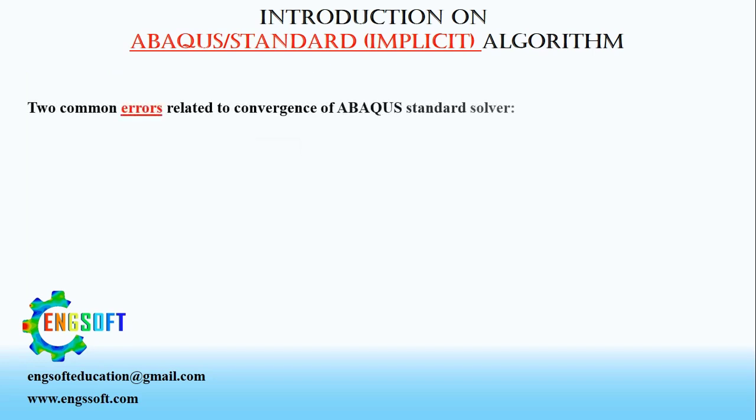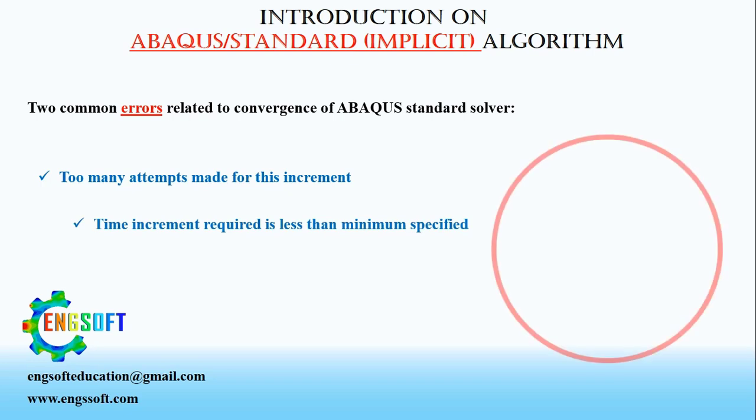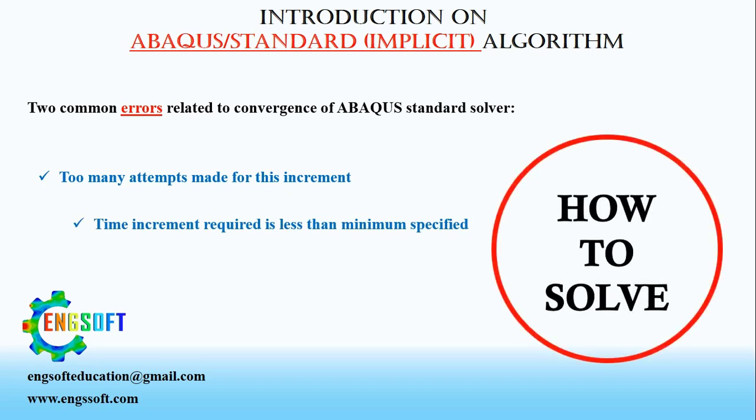There are two common errors related to convergence of implicit solver method, which are: too many attempts made for this increment, and time increment required is less than minimum specified. How to solve and avoid these two common errors will be discussed in our future video.